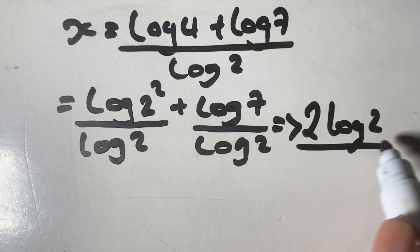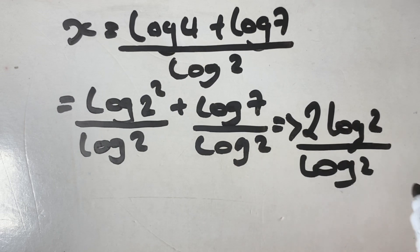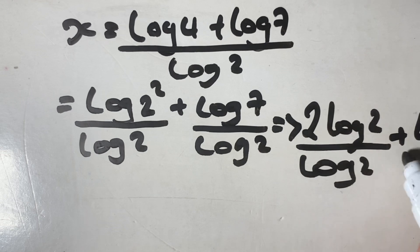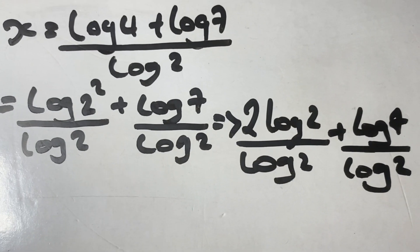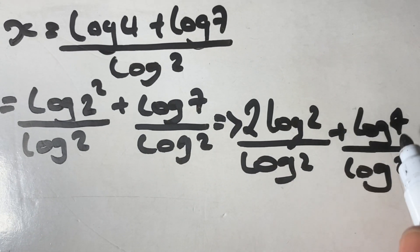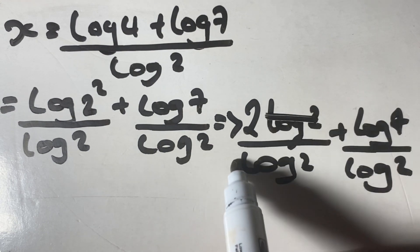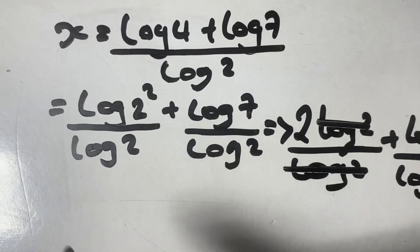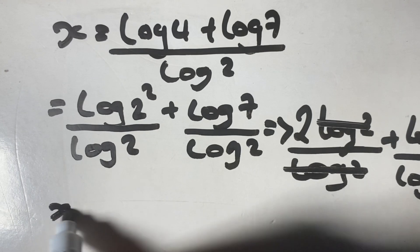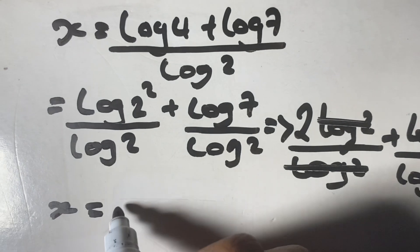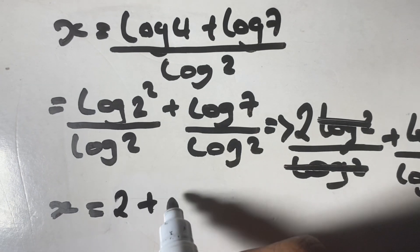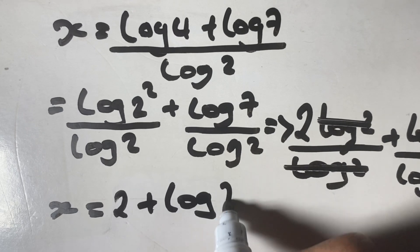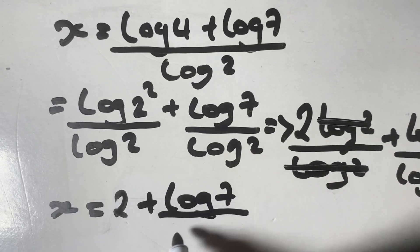So we have 2 log 2 divided by log 2, plus log 7 divided by log 2. Now we cancel log 2 over log 2, and x is now simplified as x equals 2 plus log 7 over log 2.